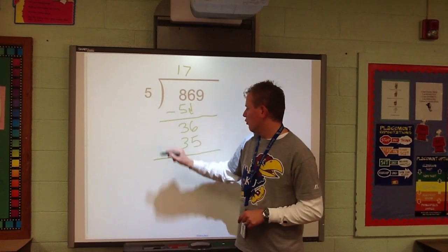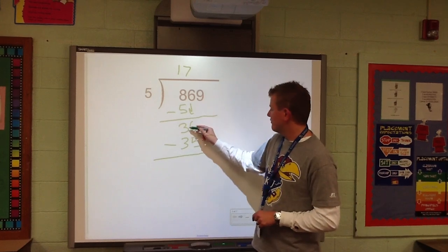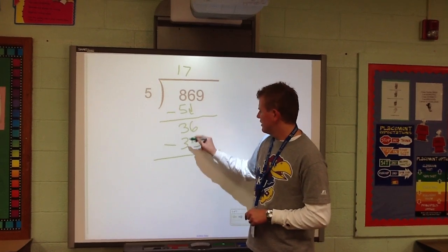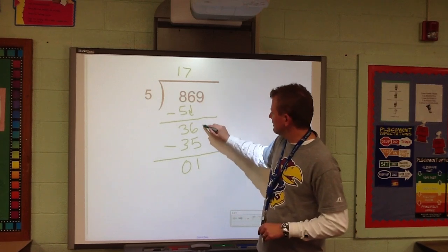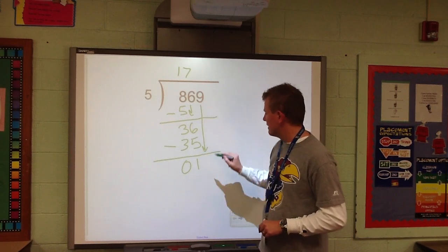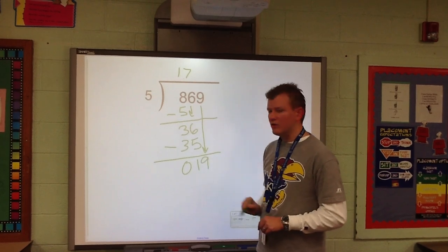I'm going to subtract once again. I have 6 minus 5 is 1. 3 minus 3, nothing, 0. And same thing. I'm going to bring down that 9. We haven't forgot about you.